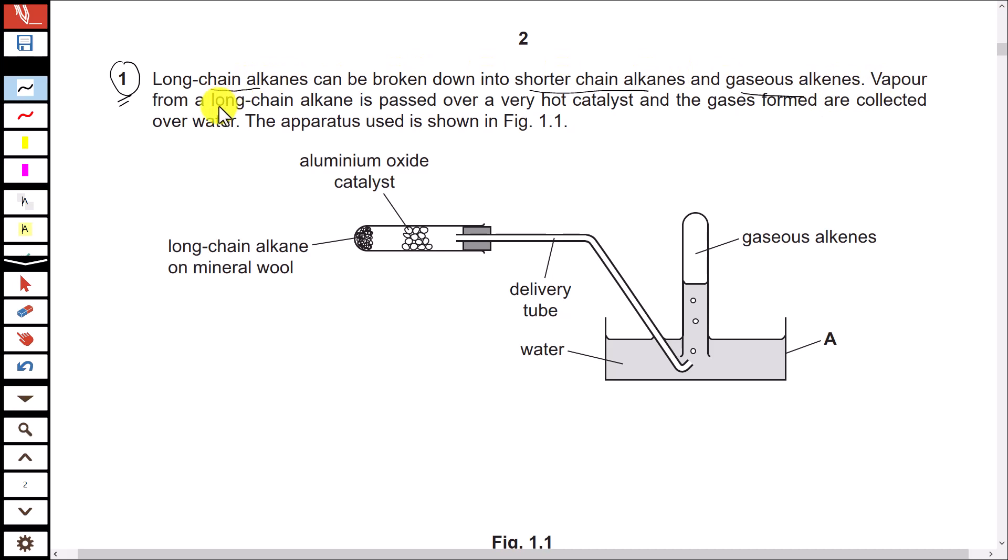Vapor from long chain alkane is passed over very hot catalyst and gases formed are collected over water. The apparatus used is shown in this figure. What are the questions?